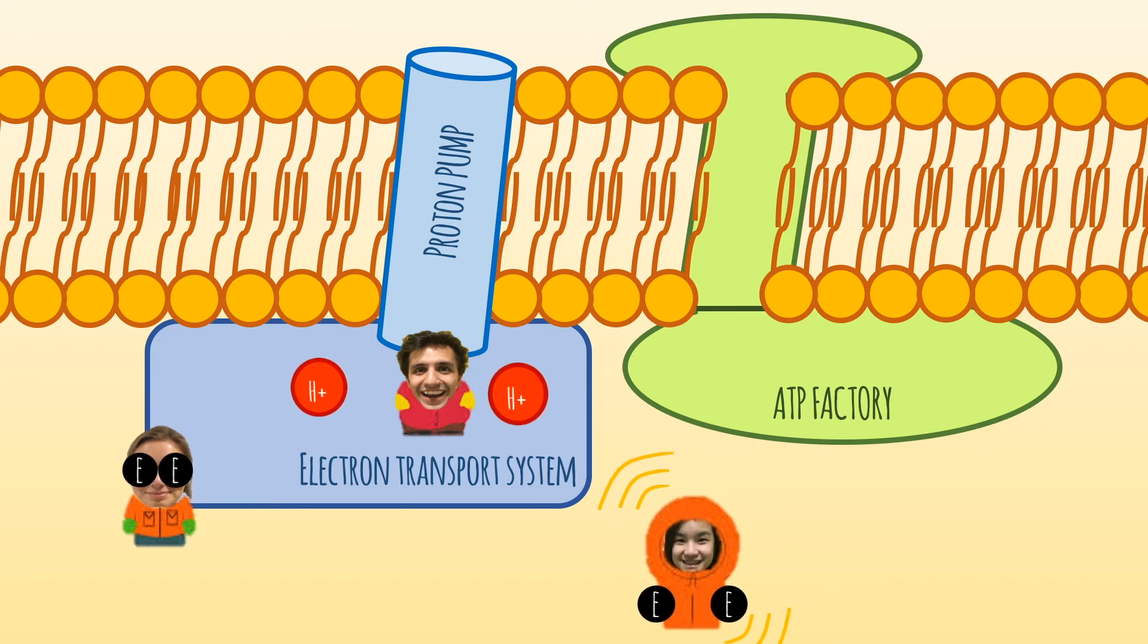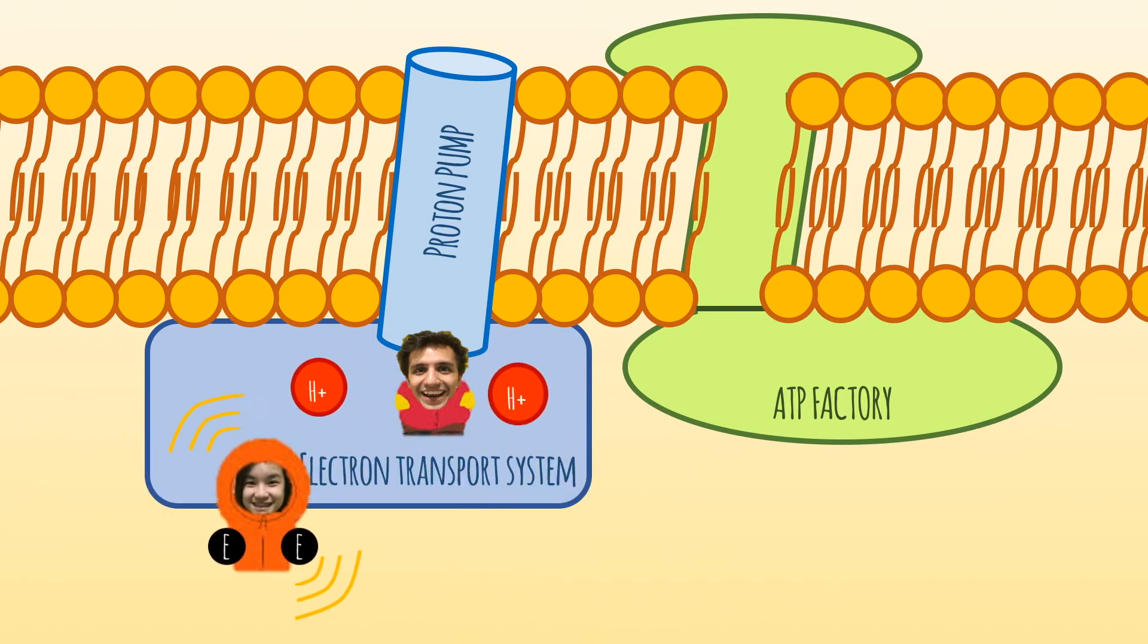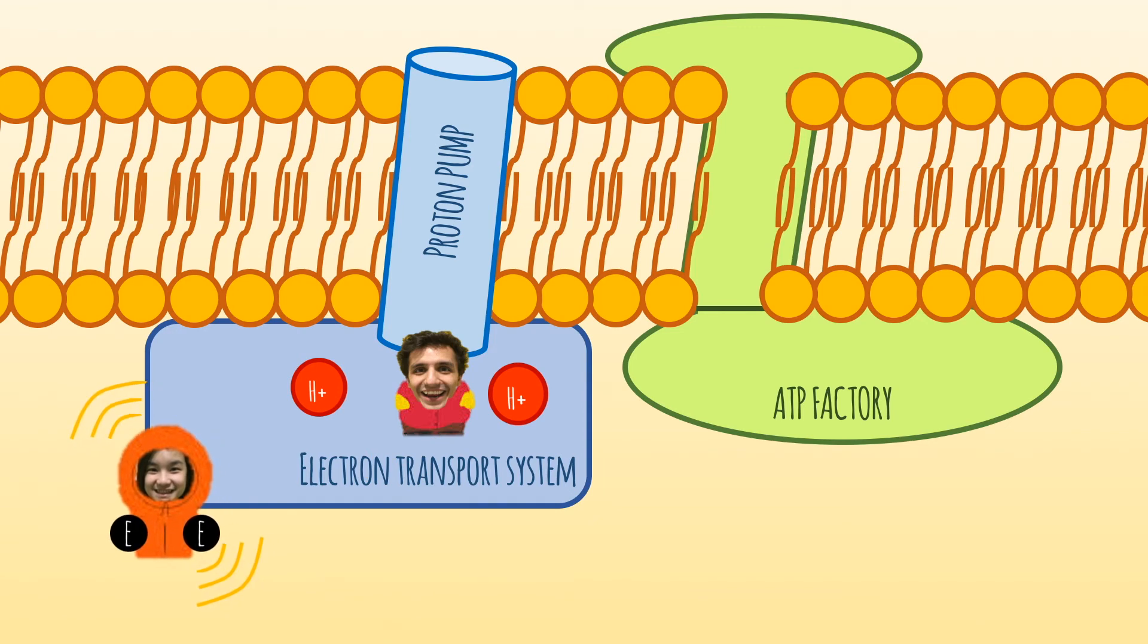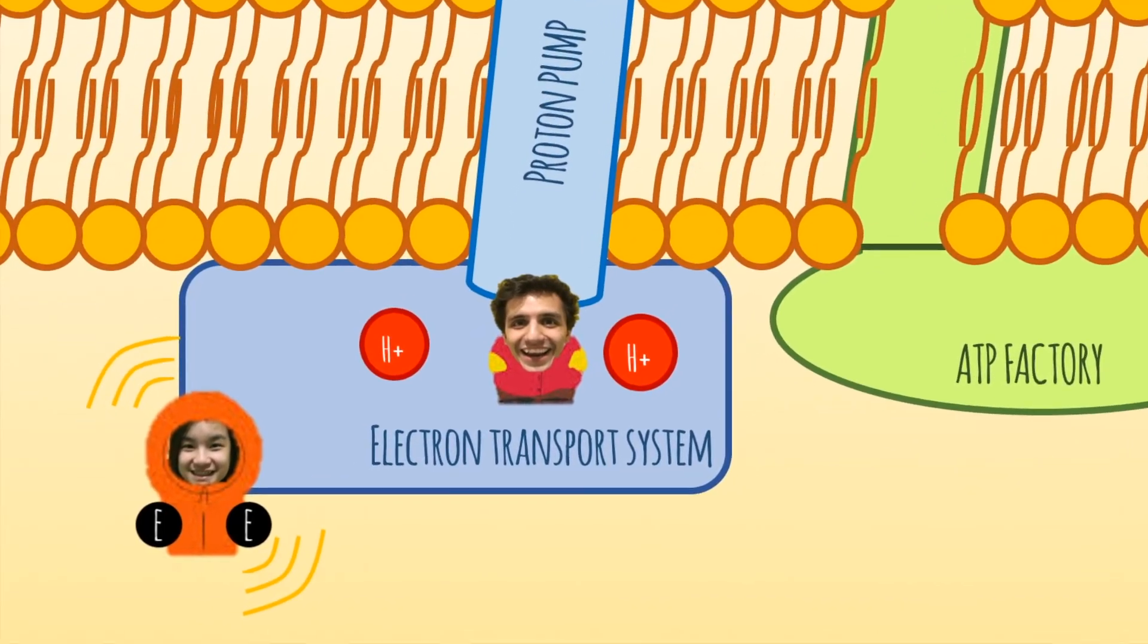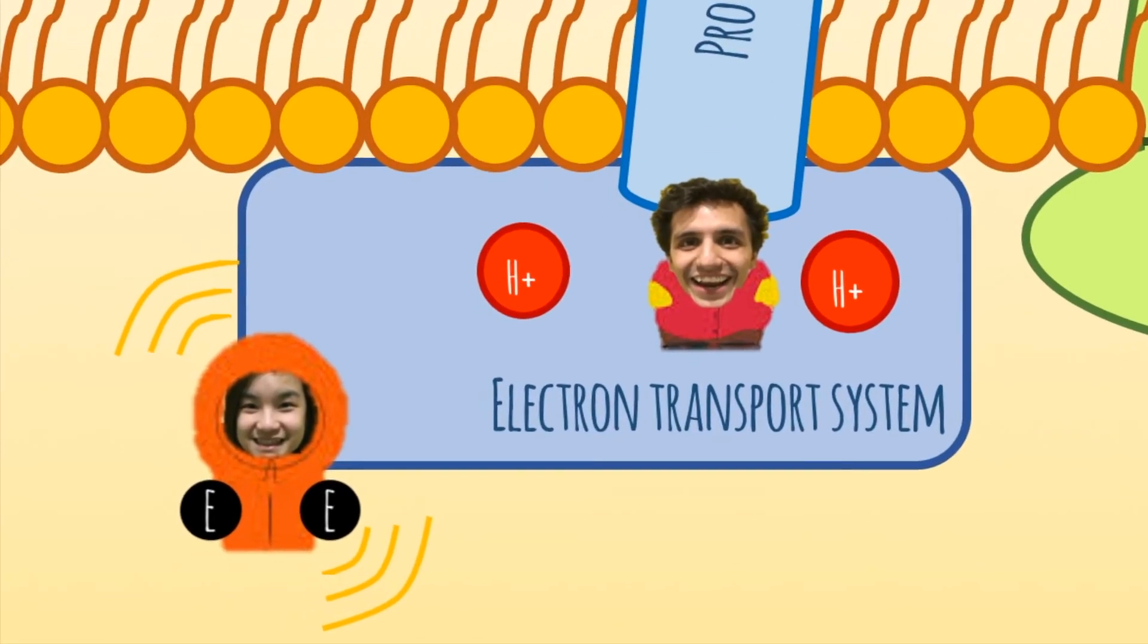But let's see how hardoxin does it. Since hardoxin is really energized, the transfer of electrons to ecidoxin can release a lot of energy, which is used to pump electrons across the membrane.